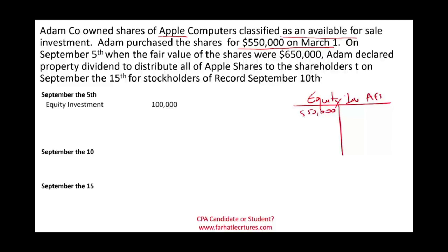On September 5th, when the fair value of the shares was $650,000, Adam declared a property dividend to distribute all the Apple shares to shareholders on September 15th, for stockholders of record September 10th. Adam decided to distribute those shares to shareholders, and when they made that decision the shares of Apple had jumped to $650,000.